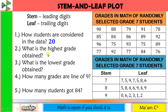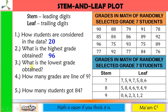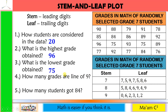Next, what is the highest grade obtained? Look for the stem of 9 and find the highest number in the leaf — that would be 6, so the answer is 96. What is the lowest grade obtained? Look for stem 7 and find the lowest number in the leaf — that would be 5, so the answer is 75.